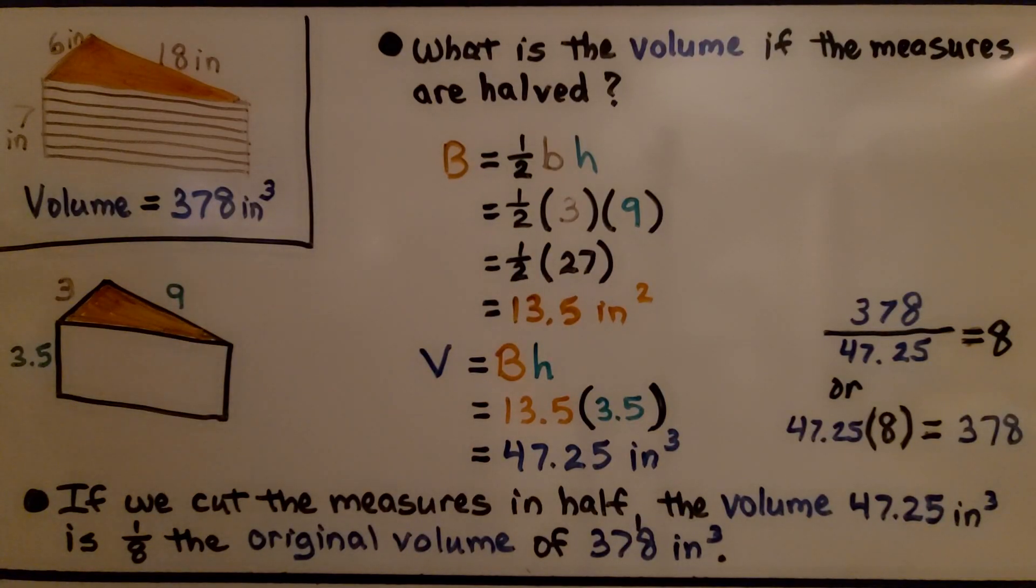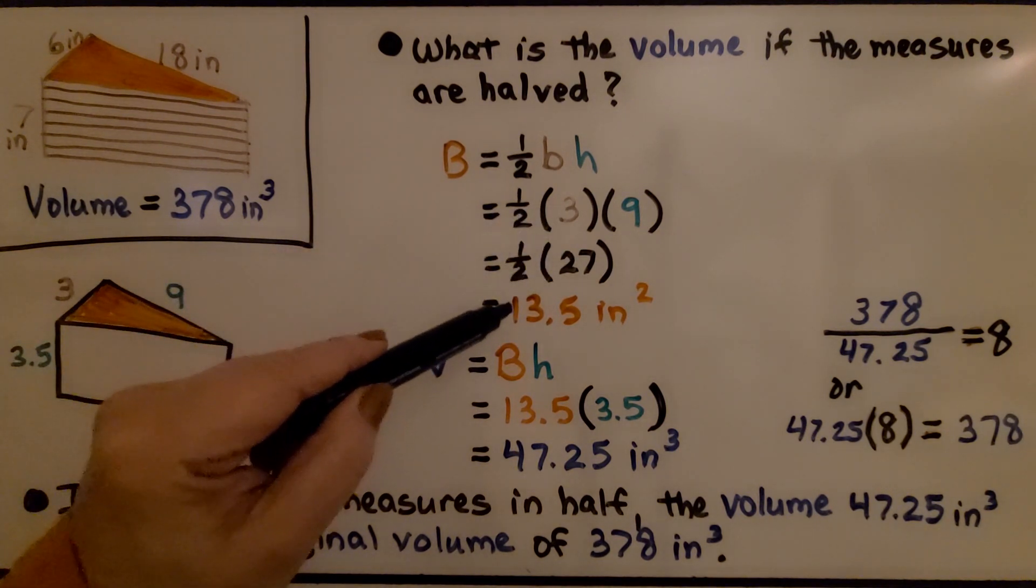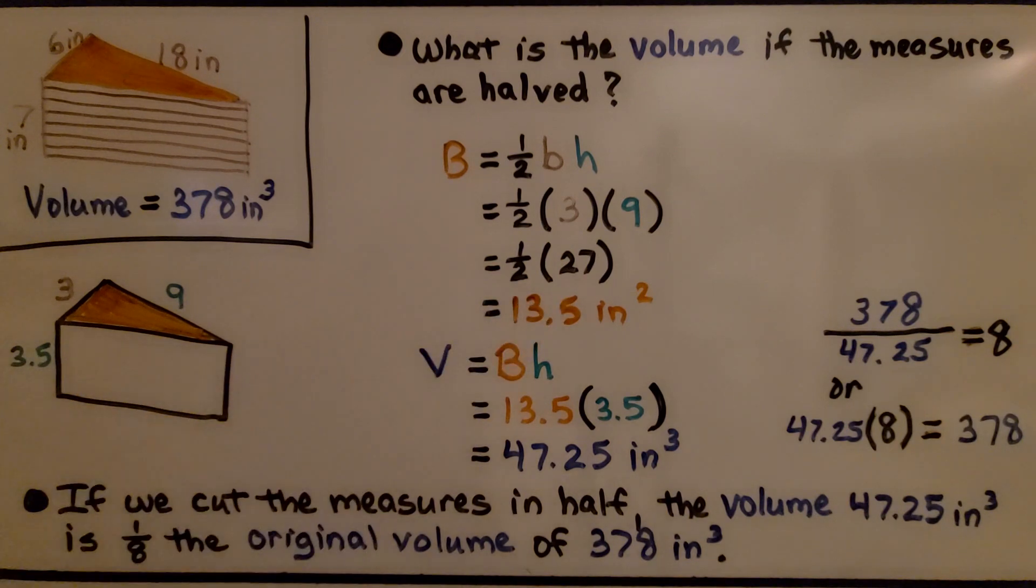We found the volume of our wedge to be 378 inches cubed. What is the volume if the measures are halved? We'll cut 18 inches in half to 9, 6 inches to 3, and 7 inches to 3.5. We find the base area of our halved measures. It's ½ × base × height, so ½(3)(9) = ½(27) = 13.5 inches squared.